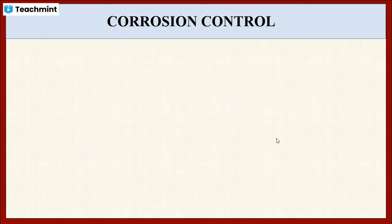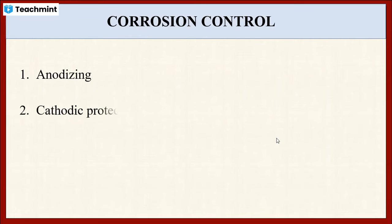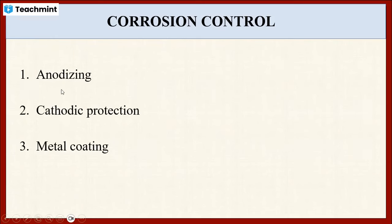Preventing the metal from a corrosive environment is very important. For this purpose, many researchers have developed methods to control corrosion. Some of them are anodizing, cathodic protection, and metal coating. In this section, let us see about anodizing.